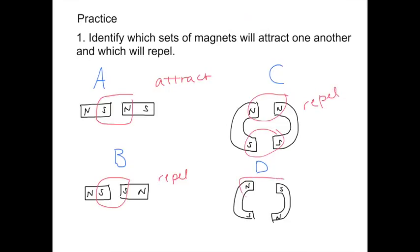Finally, in D, we have a north next to a south and a south next to a north, making the magnets attract.